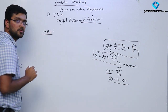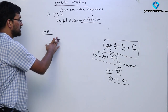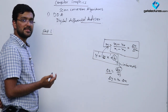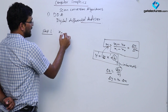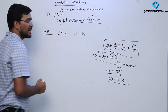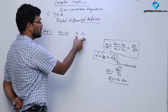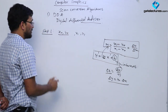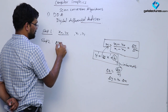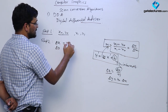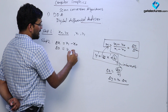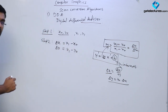Let's go through the algorithm and then discuss each step. Step 1: We are given two points — a source point x0 comma y0 and a destination point x1 comma y1. We have to draw a line from x0 comma y0 to x1 comma y1. Step 2: Calculate delta x and delta y. Delta x is x1 minus x0 and delta y is y1 minus y0.